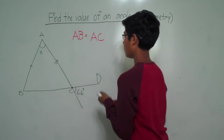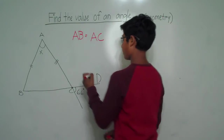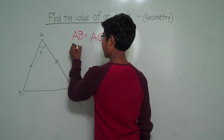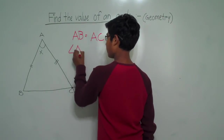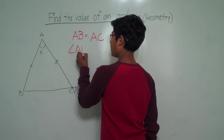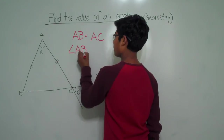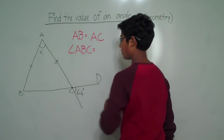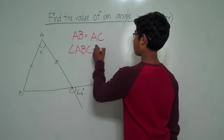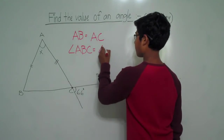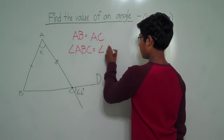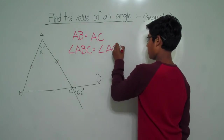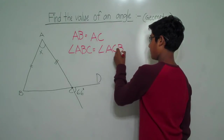So let's write that down: angle ABC is equal to angle ACB.